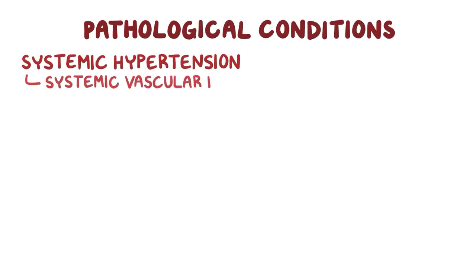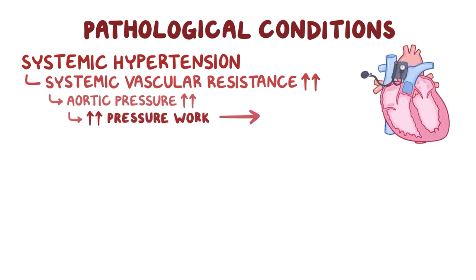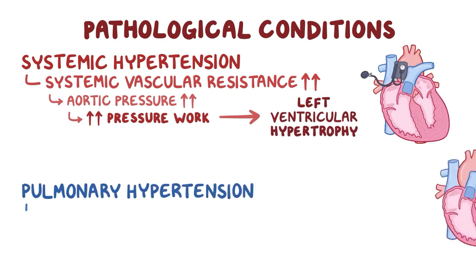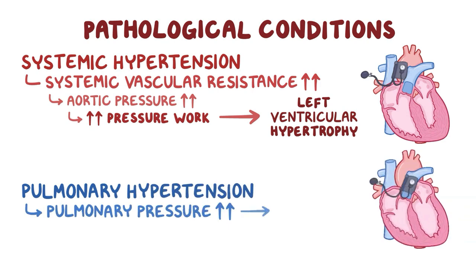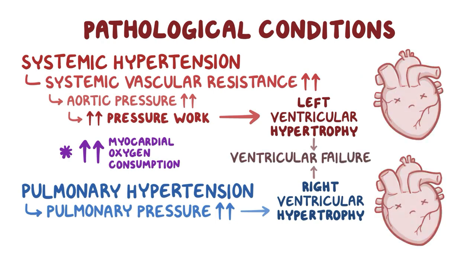In pathological conditions like systemic hypertension, where the systemic vascular resistance is increased, aortic pressure is higher than normal, so the left ventricle must perform even more pressure work. Over time, the left ventricle wall thickens even more to compensate, which is called left ventricle hypertrophy. Similarly, in conditions like pulmonary hypertension, pulmonary pressure is higher than normal, causing right ventricle hypertrophy. This increases myocardial oxygen consumption. Unfortunately, if left untreated, ventricular hypertrophy can eventually progress to ventricular failure, when the ventricles can't pump enough blood to meet the body's needs.